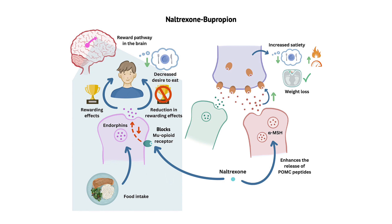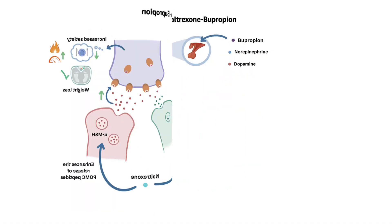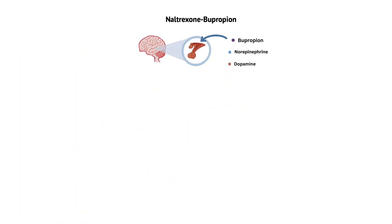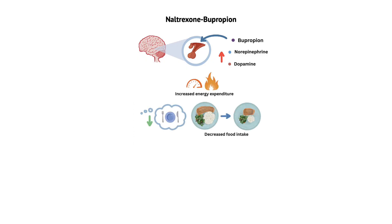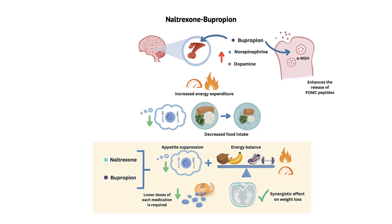Bupropion primarily affects the neurotransmitters dopamine and norepinephrine. It inhibits their reuptake, increasing their levels in the brain, resulting in increased energy expenditure and reduced appetite. Bupropion also stimulates the release of POMC peptides, similar to naltrexone, further contributing to the suppression of appetite. The combination of naltrexone and bupropion creates a synergistic effect that enhances weight loss outcomes. By targeting different neurotransmitter systems and utilizing their complementary mechanisms, the combination allows for lower doses of each medication, reducing the risk of side effects and improving tolerability. Overall, naltrexone-bupropion addresses both appetite and energy balance, making it an effective option for obesity management.